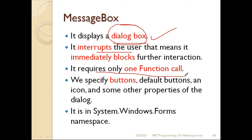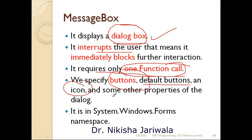MessageBox requires one function call. As I have already told you, within VB.net, everything is present in terms of classes, and within those classes, all things are present in terms of functions, procedures, properties, and events. So to implement a MessageBox, we call a function and specify which buttons, default button, icon, and other properties we need.